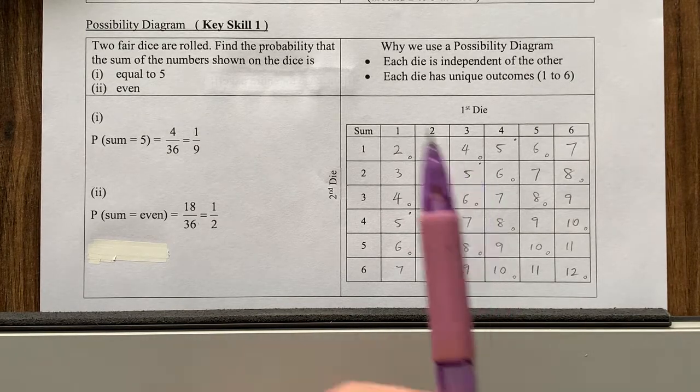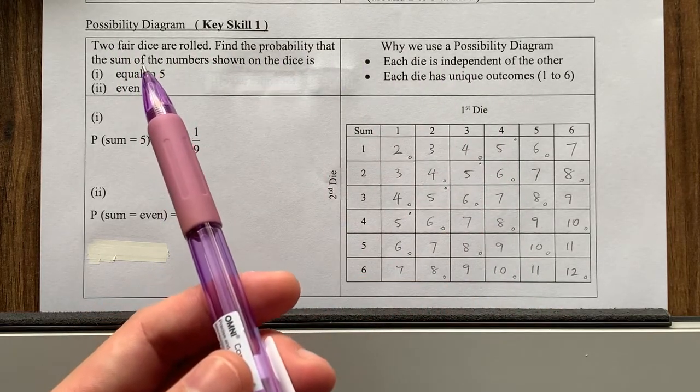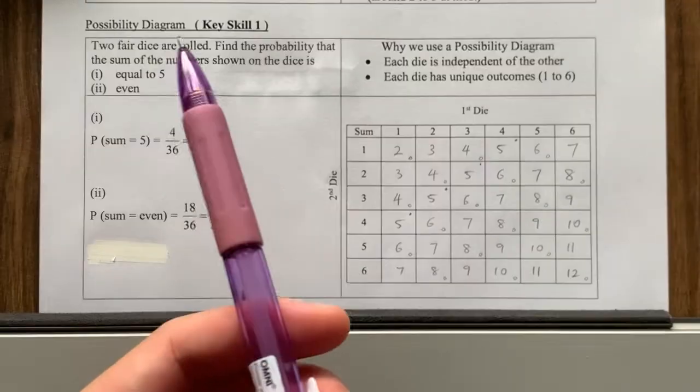So when do we use this? Generally, we use it when it's independent. That means in this case, the two dice, no matter what the first dice is the number, it won't affect the second dice. That's why it's independent.